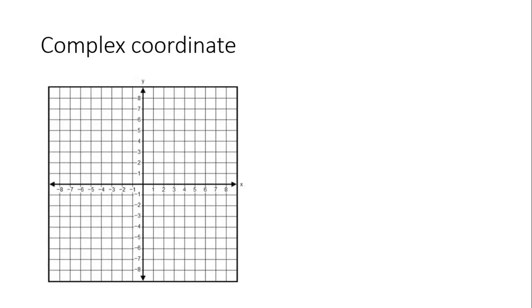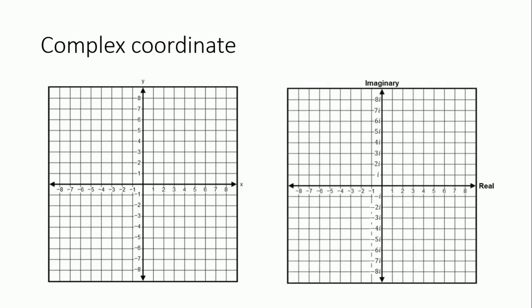Now let's talk about the complex coordinate system. On the left we have the xy plane, while on the right we have the complex plane. The xy plane involves only real numbers in two dimensions, while the complex plane has complex numbers — both real and imaginary — with one dimension for each. So if we feed the function 2x with values like 2 and 3, unlike the xy plane, points can only move horizontally in the complex plane since they are real numbers.